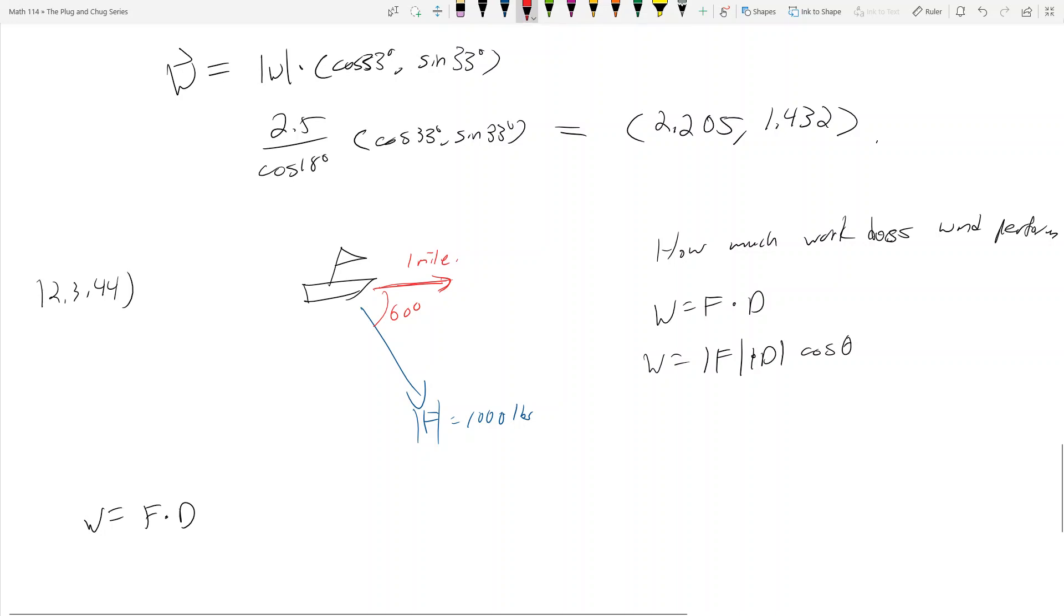So this means I have one mile times 1000 times cosine of 60 degrees, and we know how to do this.